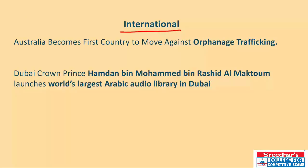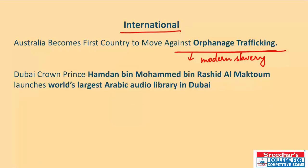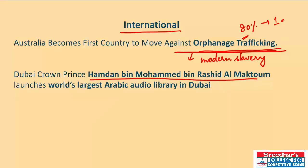In international news, Australia has become the first country to move against orphanage trafficking, marking it as a form of modern slavery. As per estimates, 80% of children living in the world's orphanages have at least one living parent. Children from smaller countries are recruited into orphanages in the west for the purpose of profit through foreign aid.